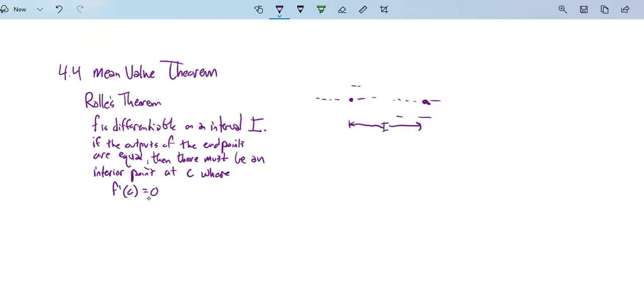If you don't believe it, try and draw. Because what happens is if you go up, you've got to come back down to get back to that same height. And when that happens, you have some turning point where the slope is 0, where the derivative is 0.